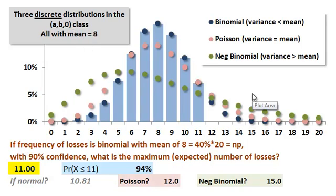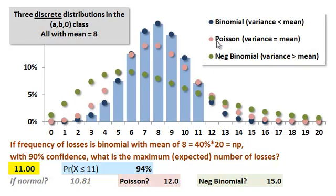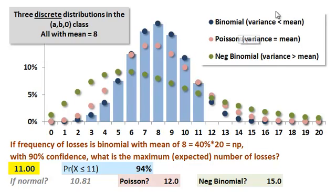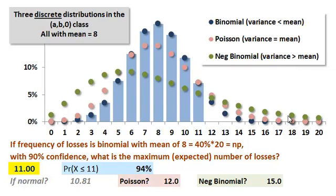That's a technical point if you want to pull up the spreadsheet just to see how they're siblings. I thought it's interesting to show that they really are part of the same family. However, here's a key difference: the Poisson, plotted with the pink dots, has variance equal to mean. The binomial in blue has variance less than mean, and the negative binomial has variance greater than mean. However, they're all discrete.